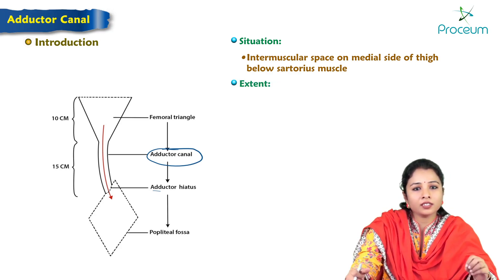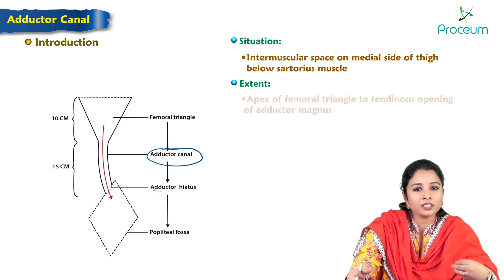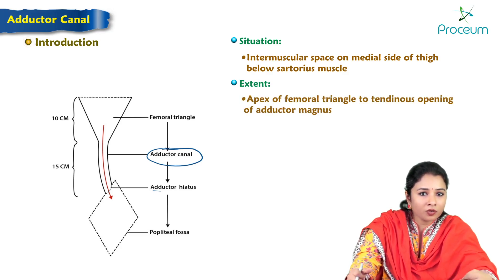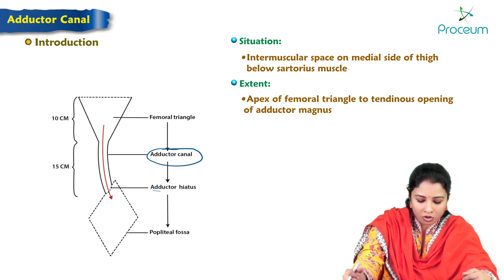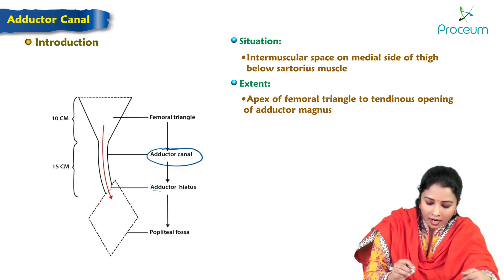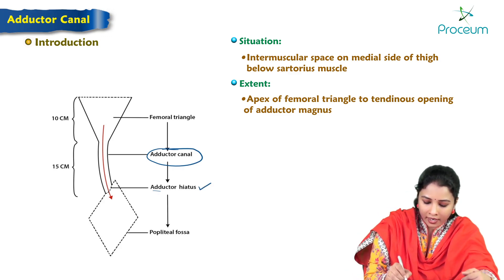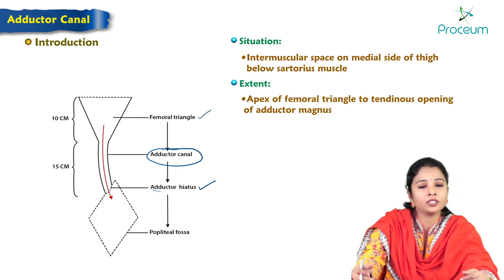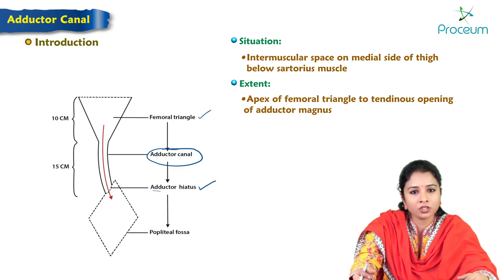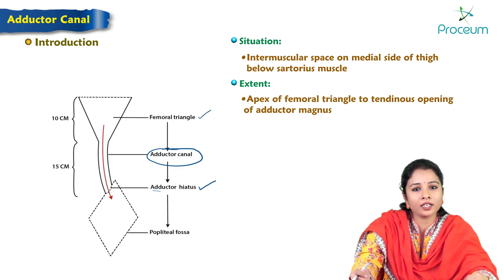The extent of the adductor canal: it extends from the apex of the femoral triangle to the tendinous opening of adductor magnus, which is called the adductor hiatus.